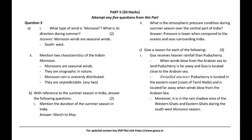What type of wind is the monsoon, and what is its direction during summer? Answer: Monsoon winds are seasonal winds; their direction during summer is southwest. Mention two characteristics of the Indian monsoon: They are seasonal winds, orographic in nature, unevenly distributed, and unpredictable — any two.